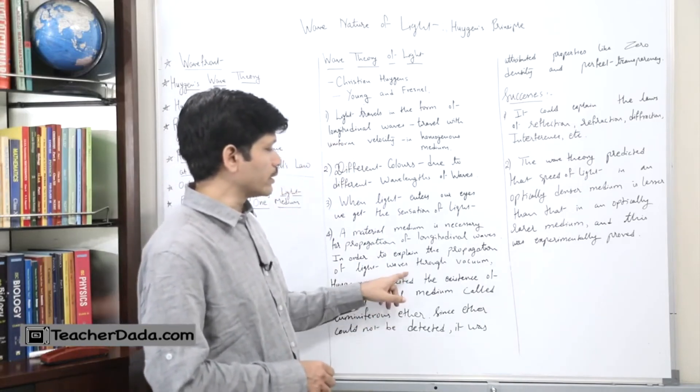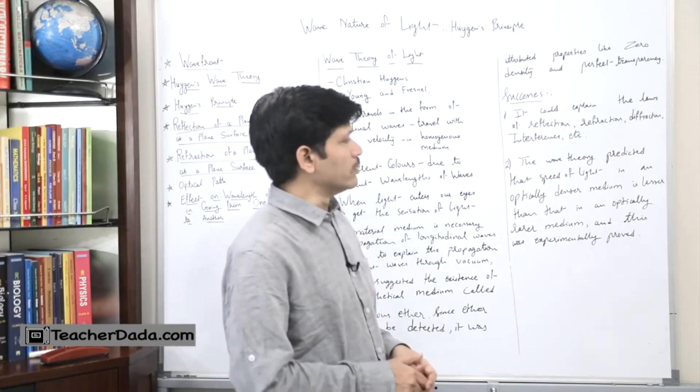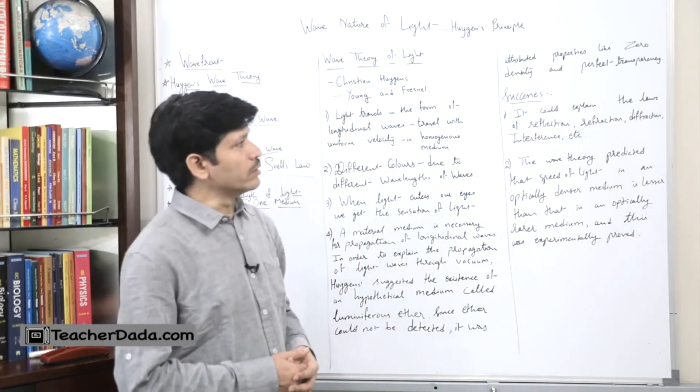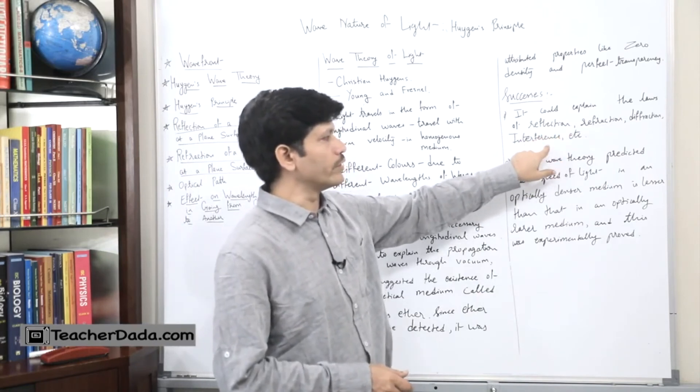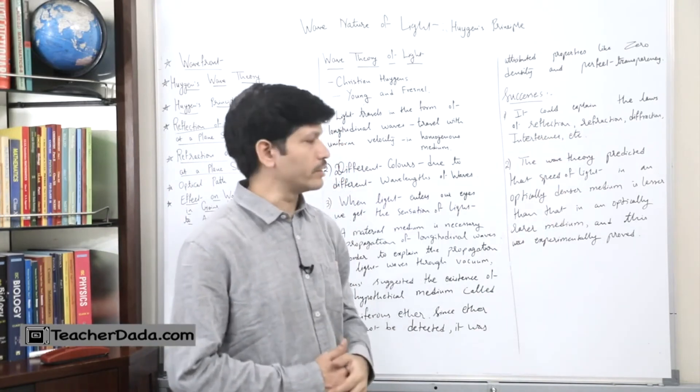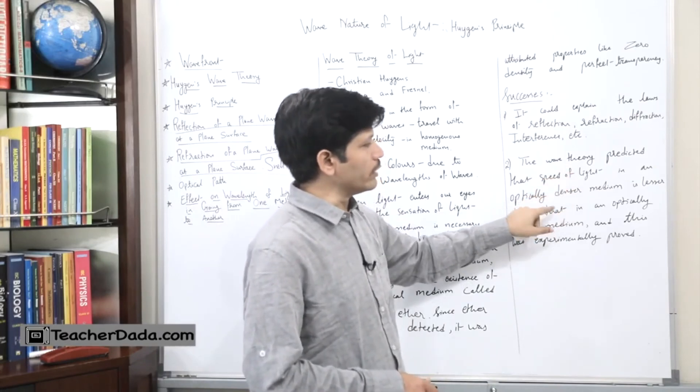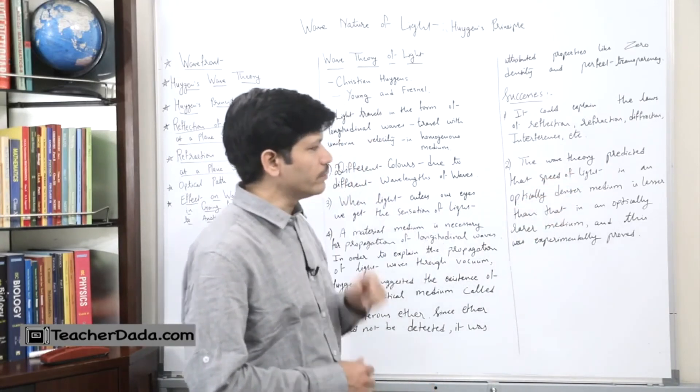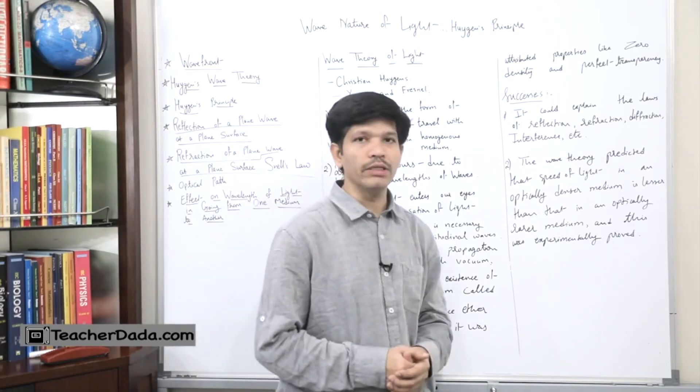Now there are some positive points about the successes. It could explain the laws of reflection, refraction, diffraction, interference, etc. The wave theory predicted that the speed of light in an optically denser medium is less than that in an optically rare medium, and this was experimentally proved.